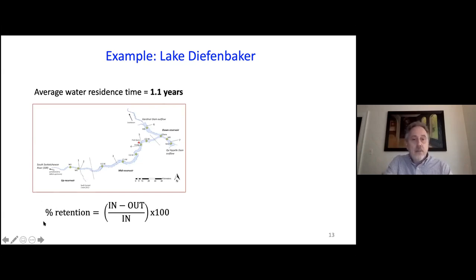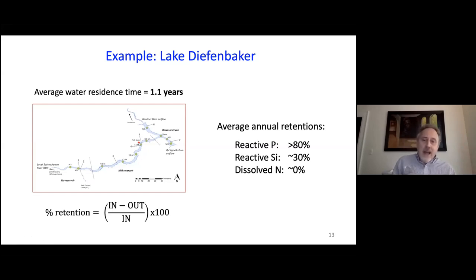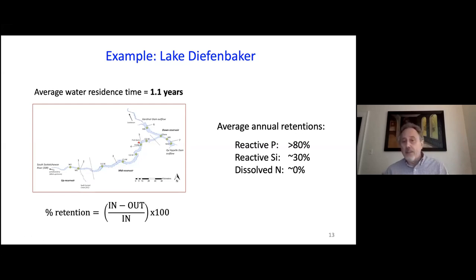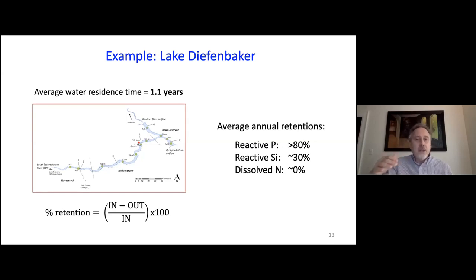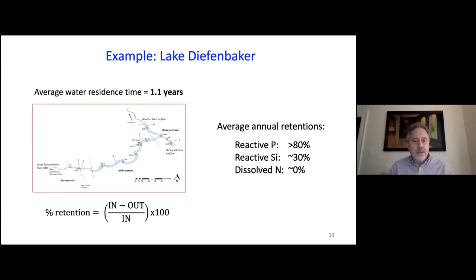For reservoirs, we can calculate the percent retention — comparing how much phosphorus enters versus leaves. For Lake Diefenbaker, with its long residence time, the average annual retention for reactive phosphorus is over 80%, close to 90% in most years. Reactive silicon shows about 30% retention, and dissolved nitrogen is close to zero — sometimes slightly positive, sometimes slightly negative. We see these huge differences very clearly for Lake Diefenbaker because of the long water residence time, but overall this pattern — reservoirs being more efficient at retaining phosphorus than silicon than nitrogen — is commonly observed.